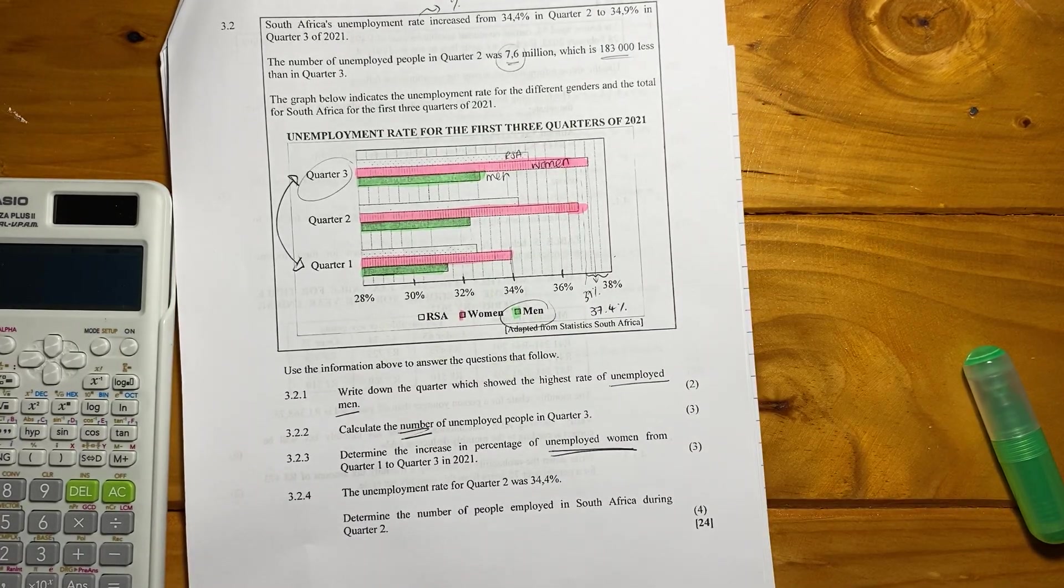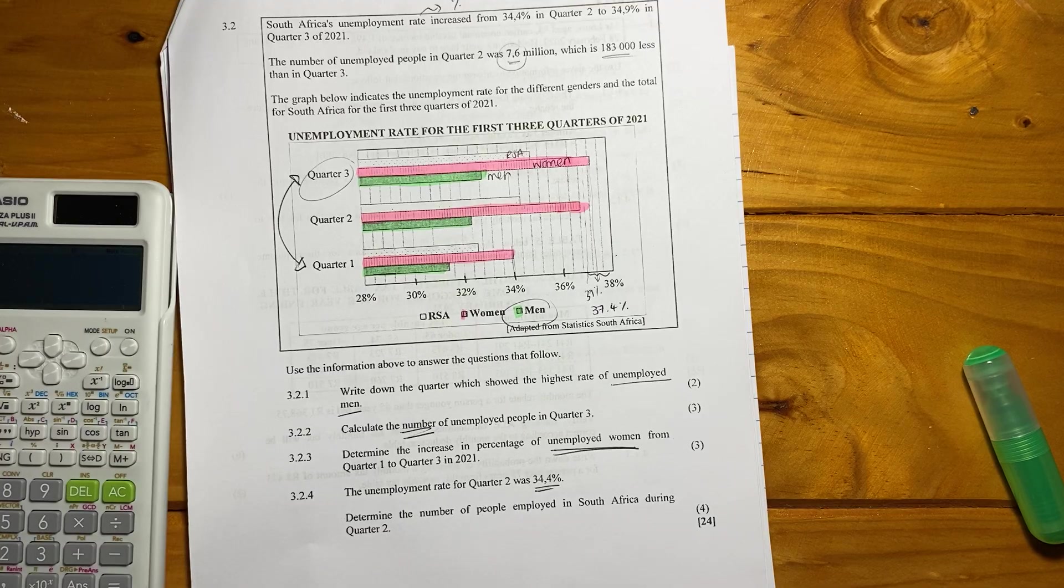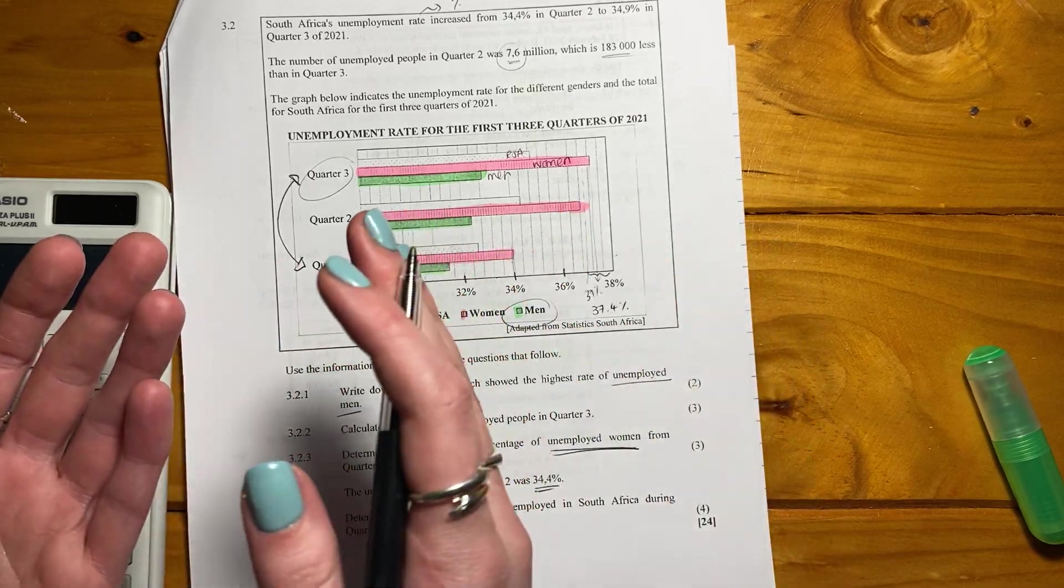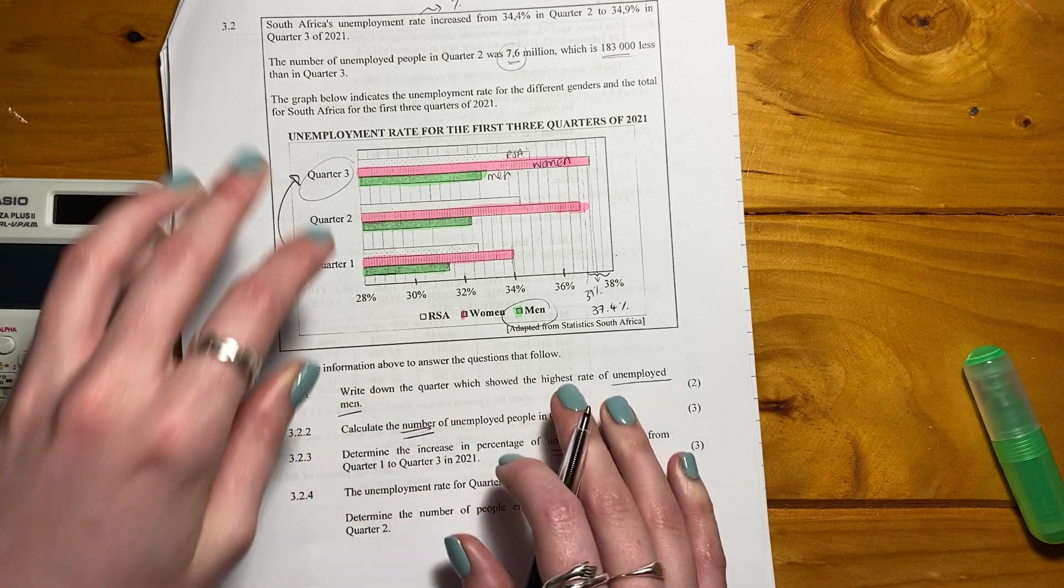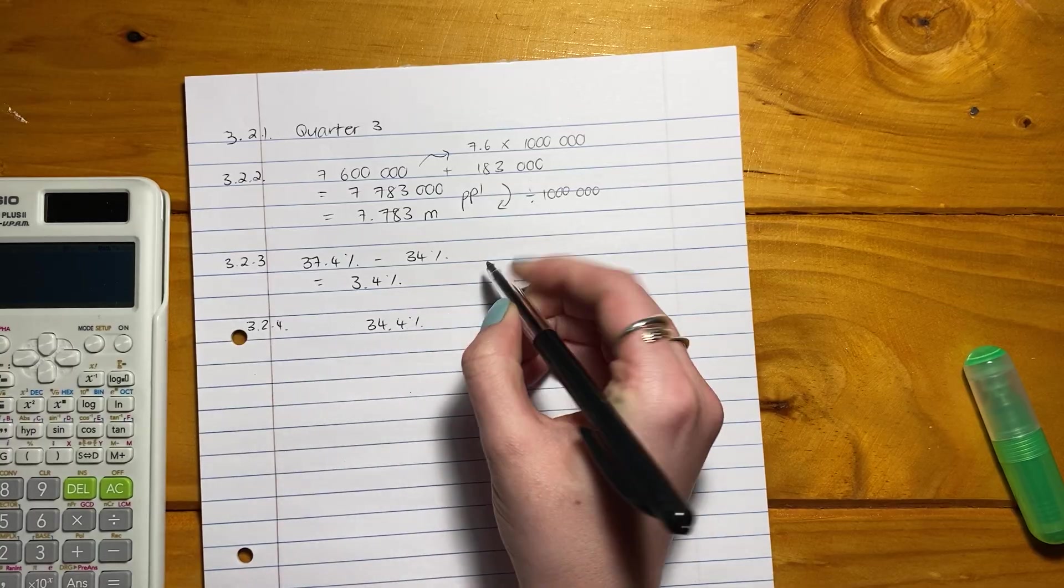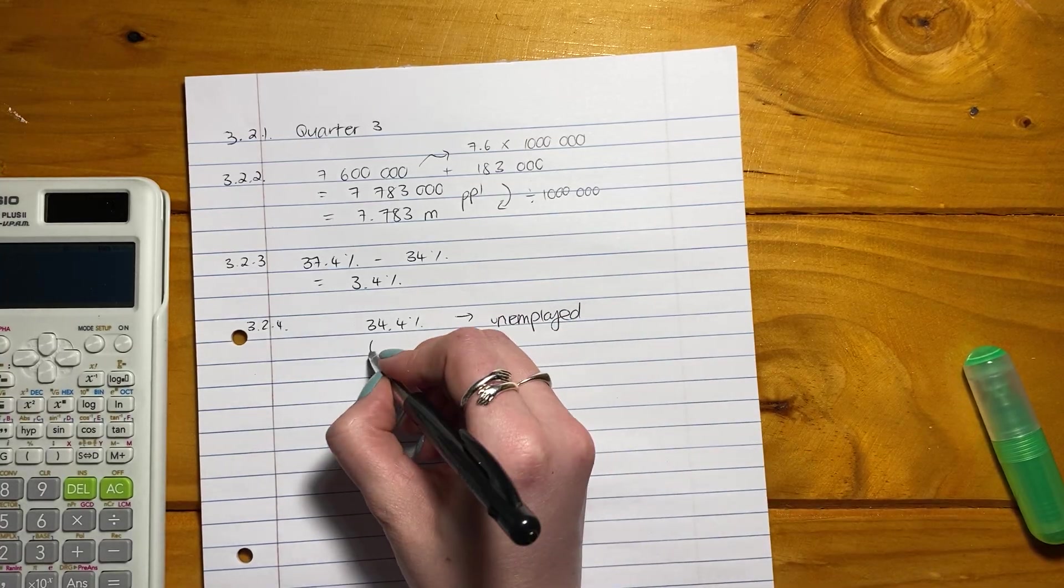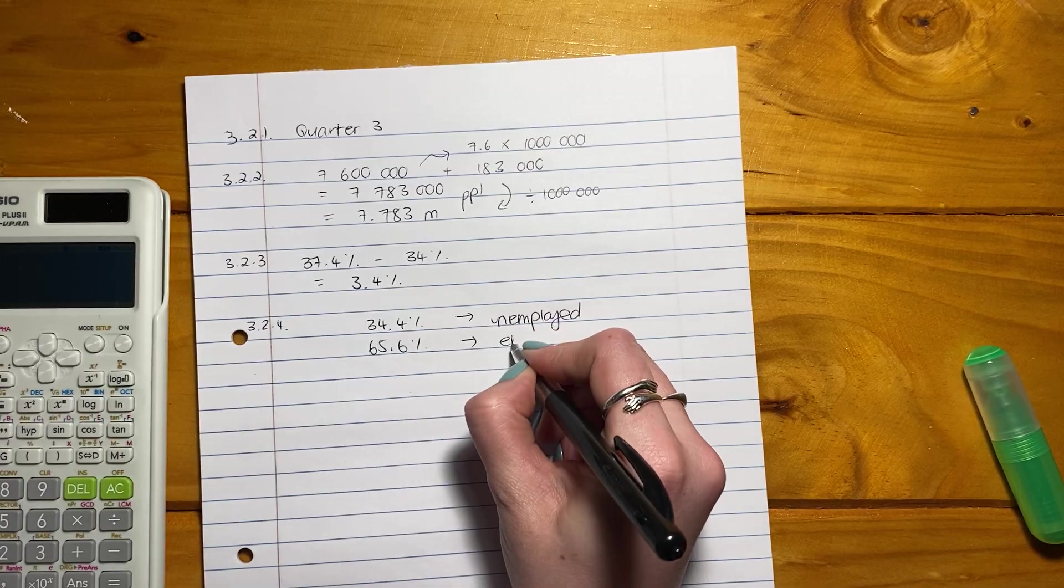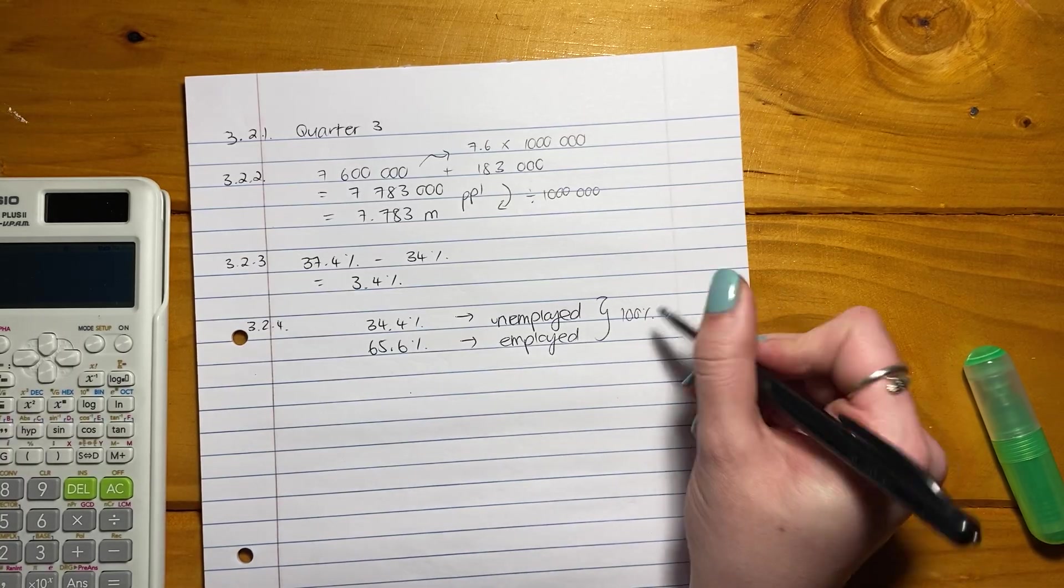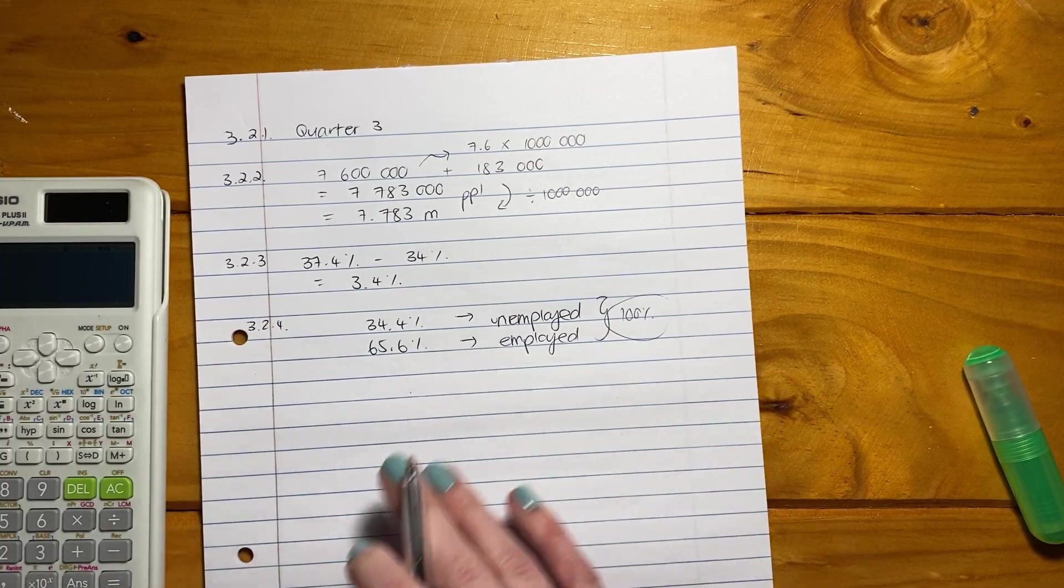Let's do the last question. It says the unemployment rate for quarter two was 34.4%. Determine the number of people employed in South Africa during quarter two. Now this is a bit of a tricky one because it's told us the percentage of unemployed, but now it's asked us for the percentage, not just the percentage of employed, but also the number. So let's write down some things that we know. So 34.4% is my unemployed. So we know that 65.6% has to be my employed. You could be saying, how did you get that? Well, do you agree with me that the unemployed plus the employed has to equal 100%? Because you're one or the other.